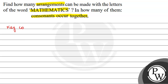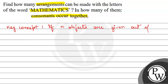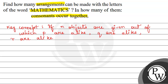First of all, we will write the key concepts. The key concept we will use is: if n objects are given, out of which p are alike, q are alike, and r are alike, then the number of permutations or arrangements can be calculated as n factorial divided by p factorial multiplied by q factorial multiplied by r factorial.